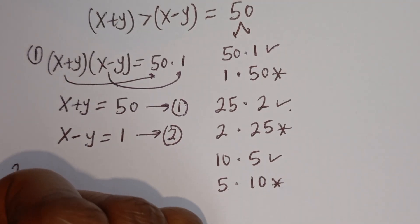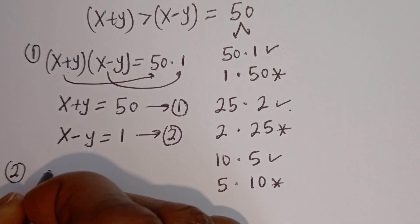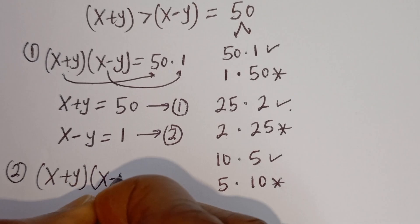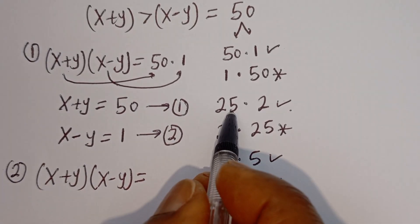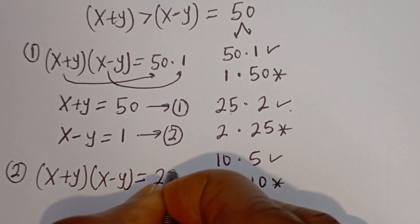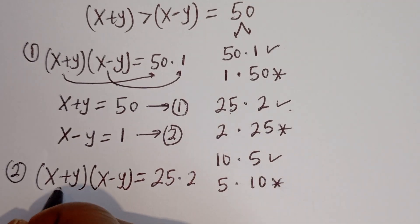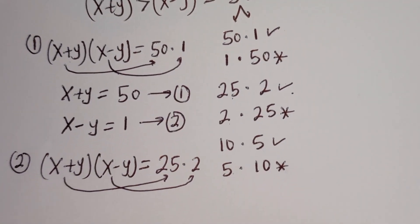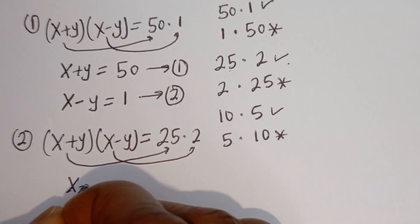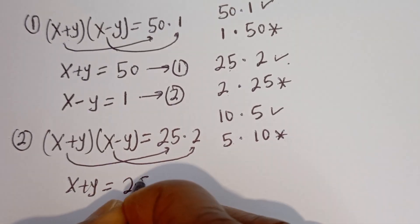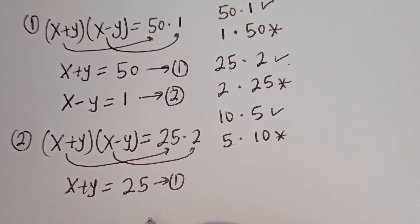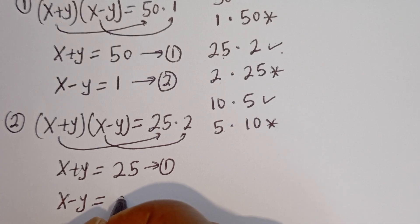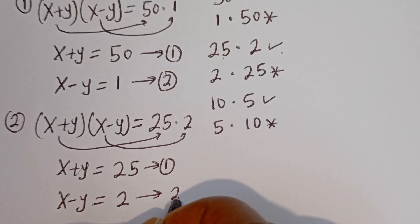From the second case, we have (x+y)(x-y) equal to 25 multiplied by 2. The larger factor goes to x plus y and the smaller to x minus y. So equation 1: x plus y equals 25, and equation 2: x minus y equals 2.